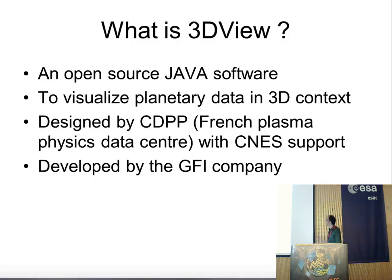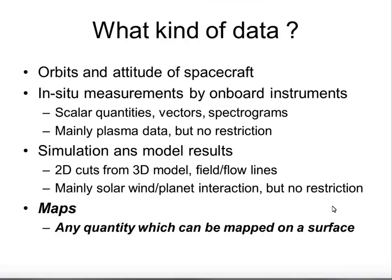The aim of the tool is to plot 3D data in a planetary context. The tool was originally done for orbits and attitude of spacecraft. Now we can plot in-situ measurements by onboard instruments — mainly scalar quantities, vectors, and spectrograms — primarily for plasma data, but there is no restriction. We can also plot simulation and model results, like 2D cuts from 3D models, field and flow lines, mainly for solar wind interaction with planets. We are also starting to develop mapping functionalities for quantities that can be mapped on the surface, which is our interest in this GIS workshop.